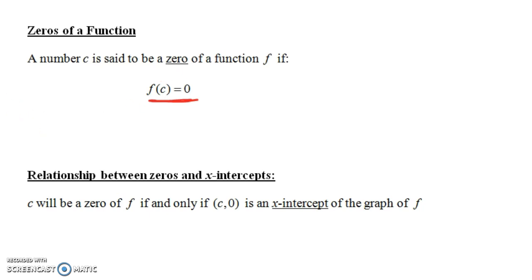There's a close relationship between the zeros of a function and the x-intercepts of a function. In fact, c will be a zero of f if and only if c comma zero is an x-intercept of the graph of f. When you plug in c and get out zero, the ordered pair c comma zero is on the graph, and c comma zero lies along the x-axis. So for every zero of a function you're going to have an x-intercept, and for every x-intercept you're going to have a zero.